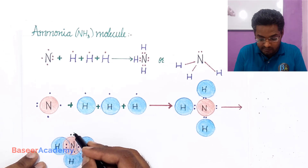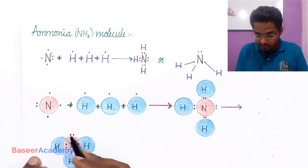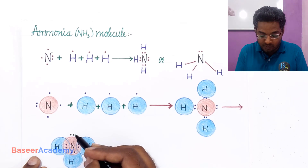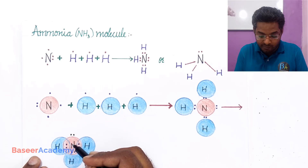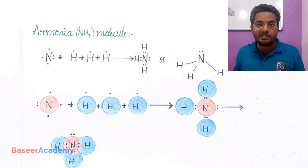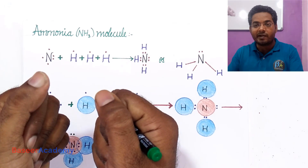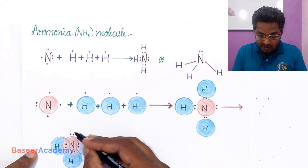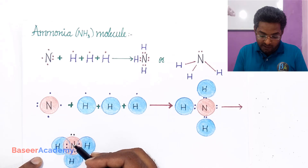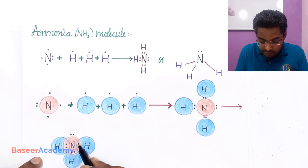The lone pair of electrons is attracted by only one nucleus. For example, in the ammonia molecule, nitrogen has one lone pair of electrons, which is attracted only by the nucleus of nitrogen. The nucleus contains protons, which are positively charged, so they attract the negatively charged electrons. The lone pair of electrons — the pair not involved in bonding — is attracted by only one nucleus, which is nitrogen itself.